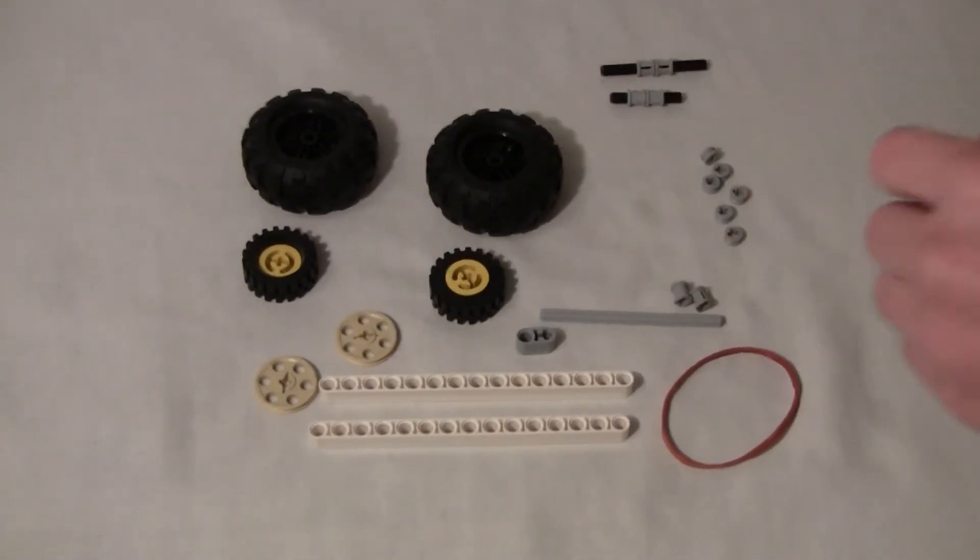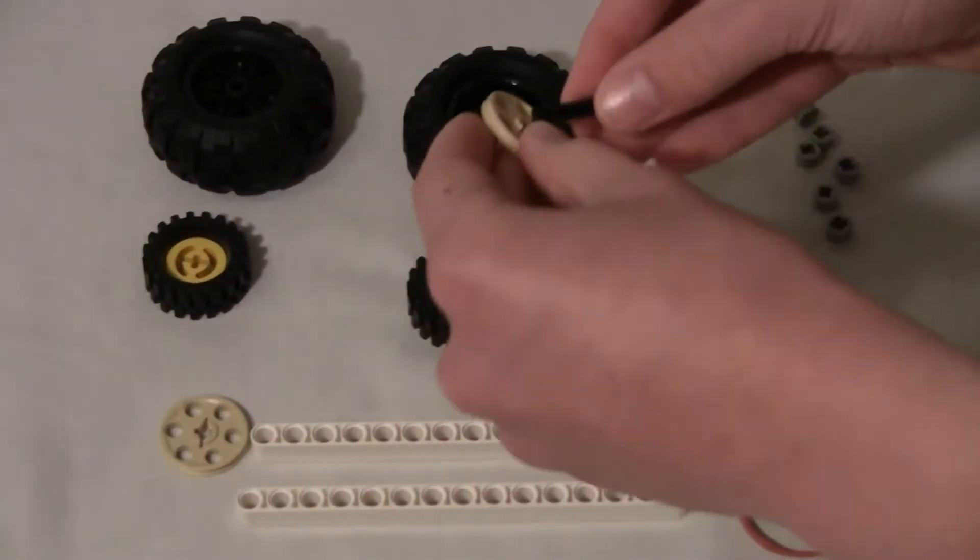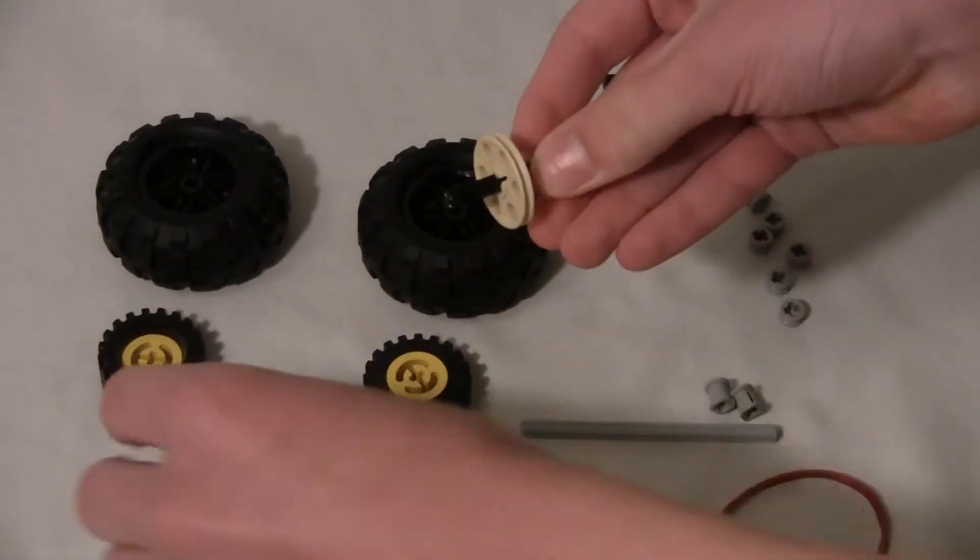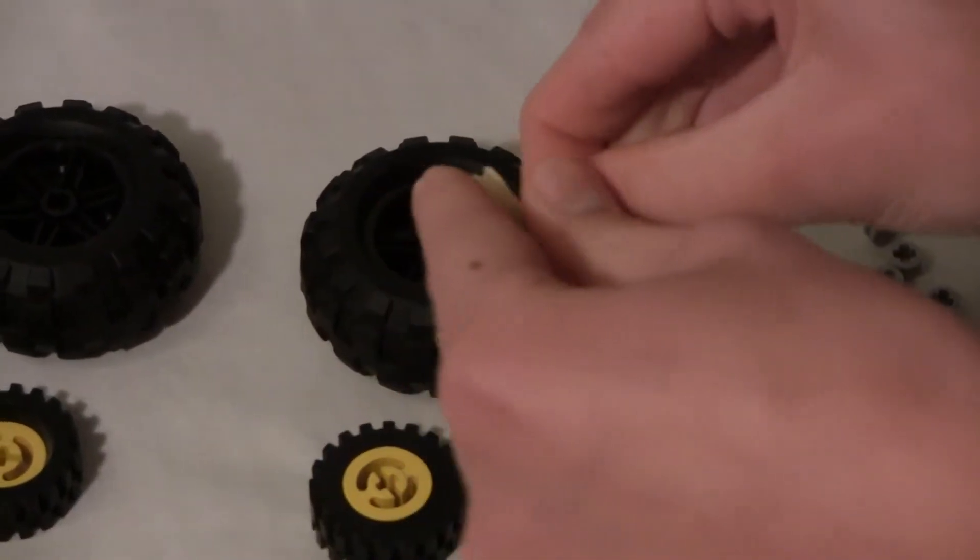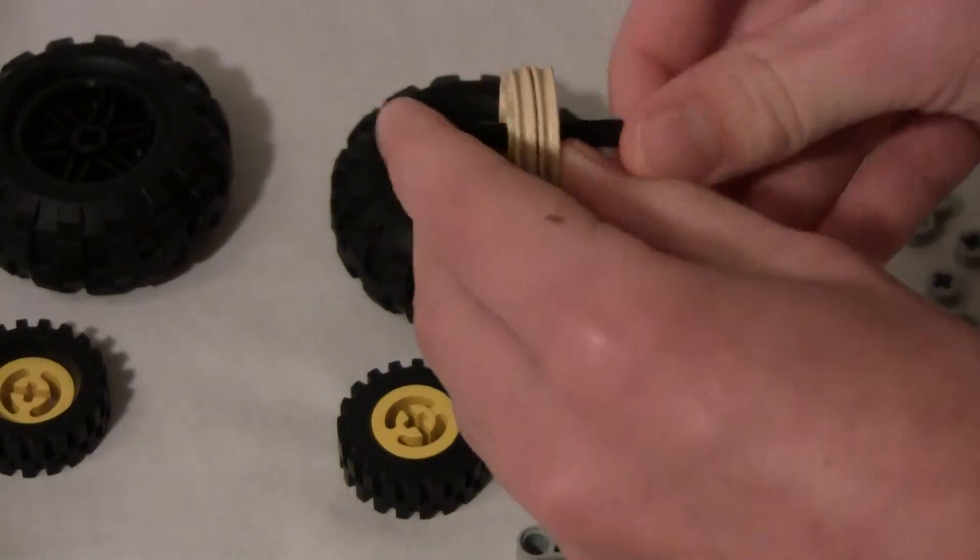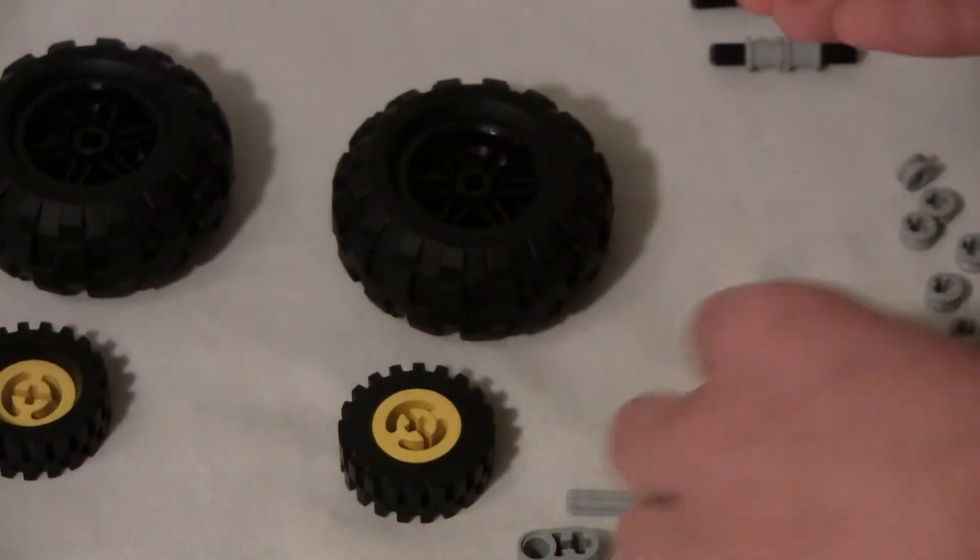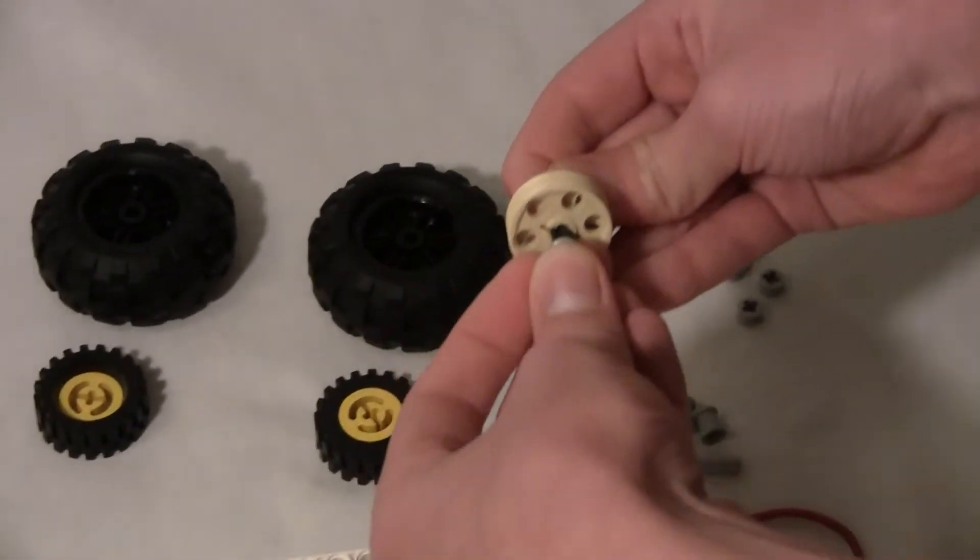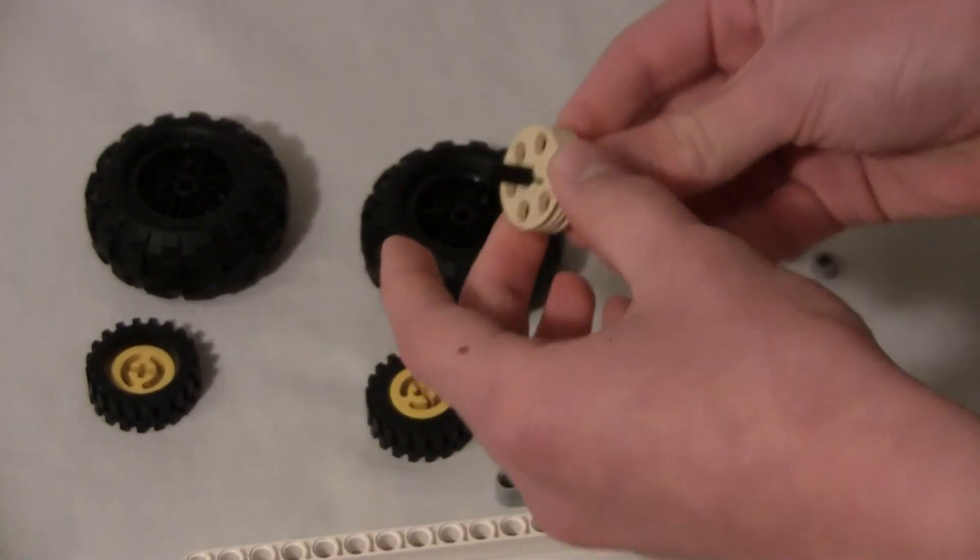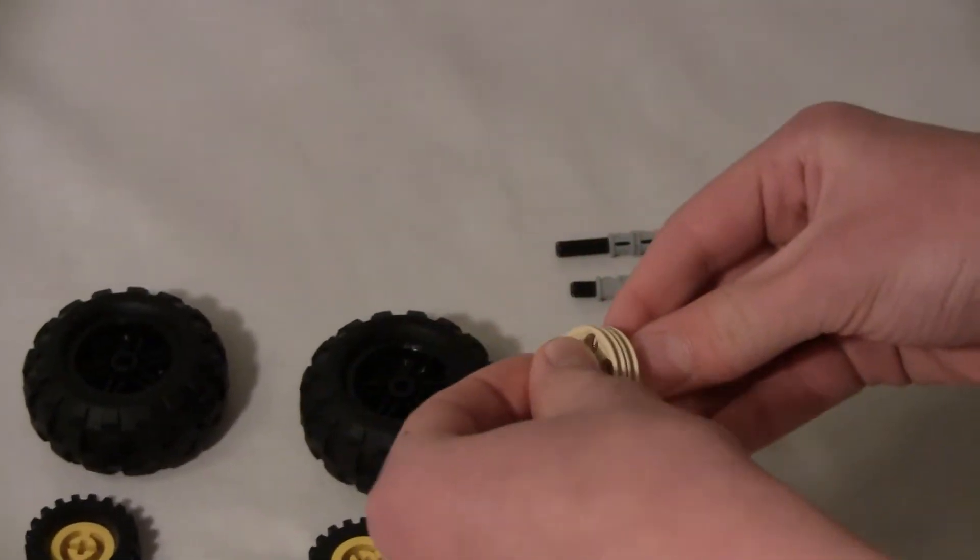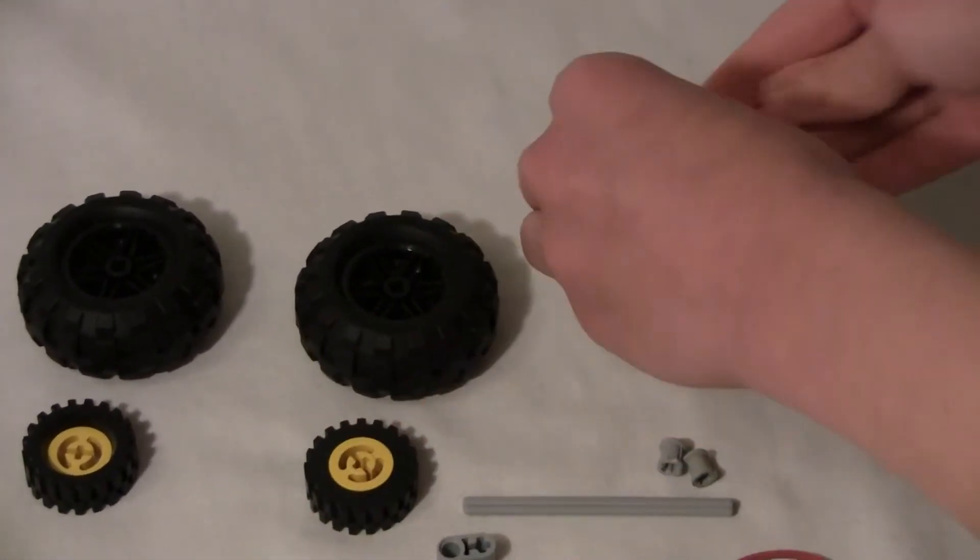Now take the next one, you are going to slide both of these into the middle of it, and you can also, if you're using a gear, you can slide the gear on. And then put a half bushing on either side. Like so. And then set that piece aside also.